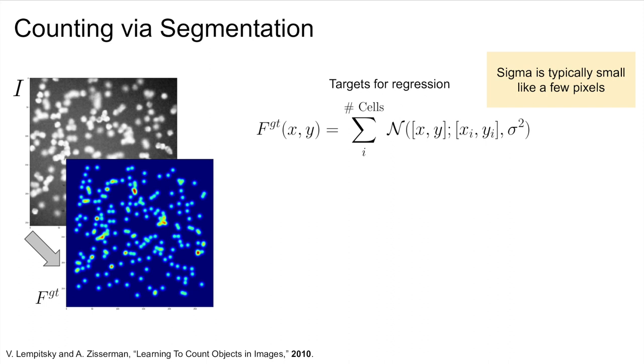A Gaussian distribution is used to represent each cell with a small standard deviation. These are combined together into the segmentation image with a nice property that if two cells are close, their distributions would sum together and require a larger value to be predicted.